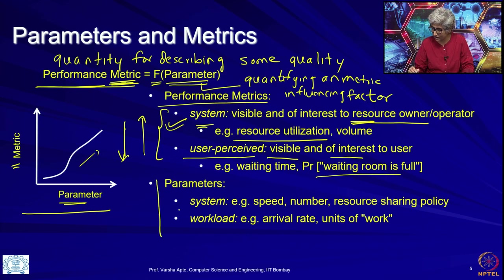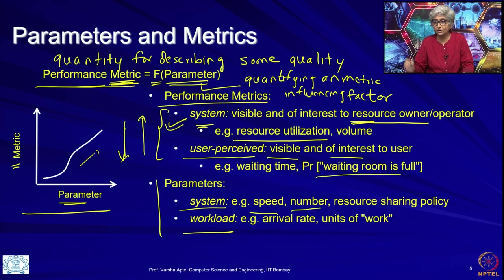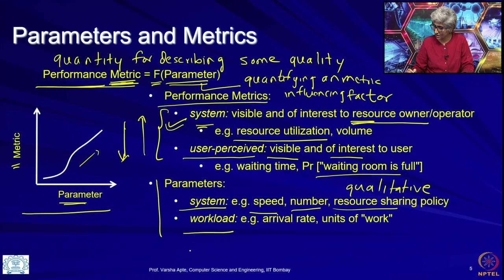Coming to parameters, there are also two types: system and workload. A resource has a speed — how many packets per second can this link carry, what is the bits per second bandwidth, how many links or CPUs or poll workers are there. All of these are system parameters that impact delay and performance. The sharing policy is also a parameter — it is actually a qualitative factor and is hard to quantify, but it is a parameter nonetheless.